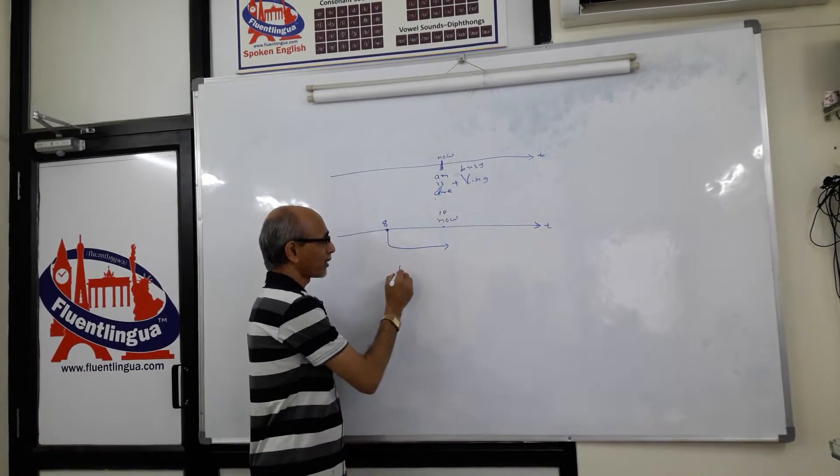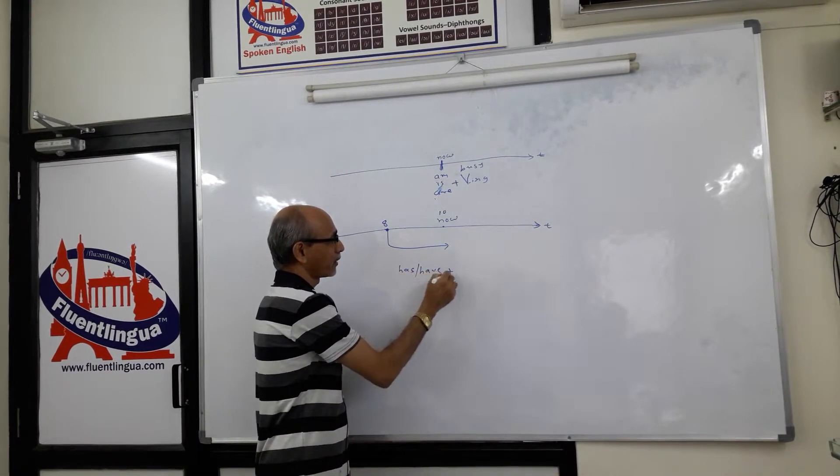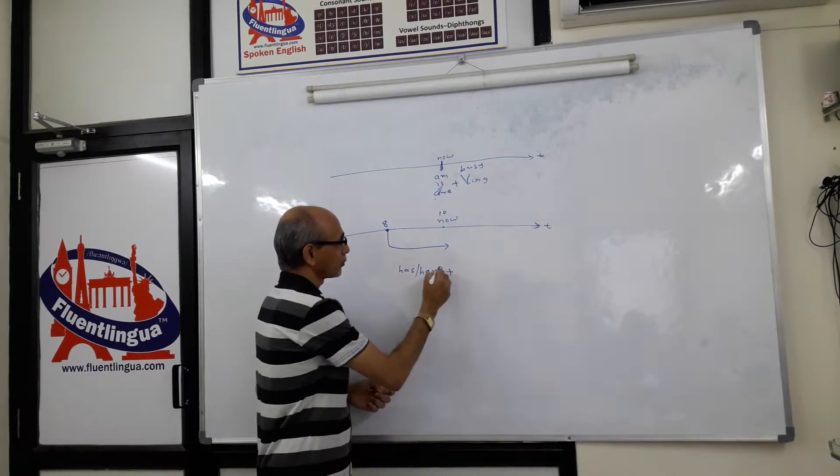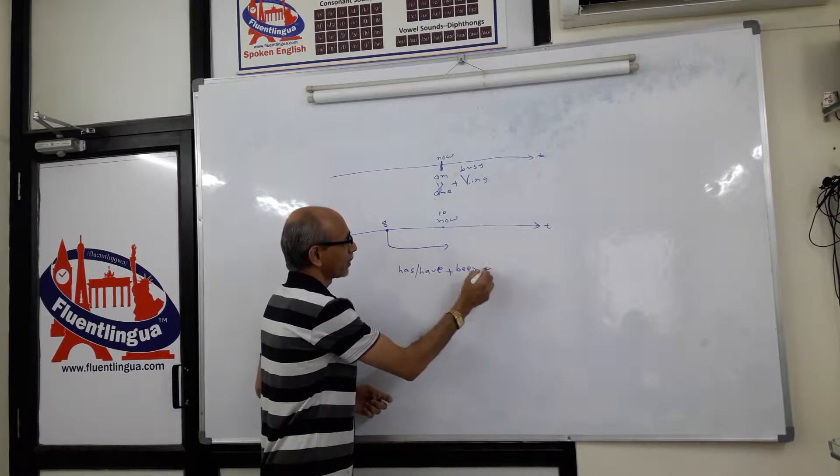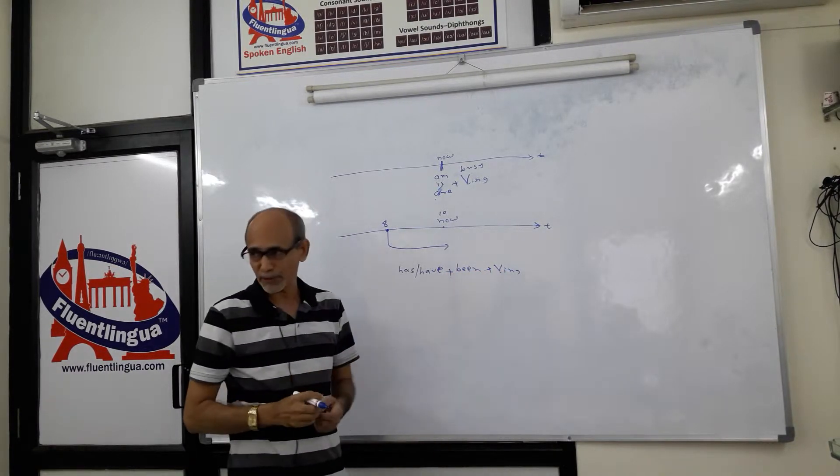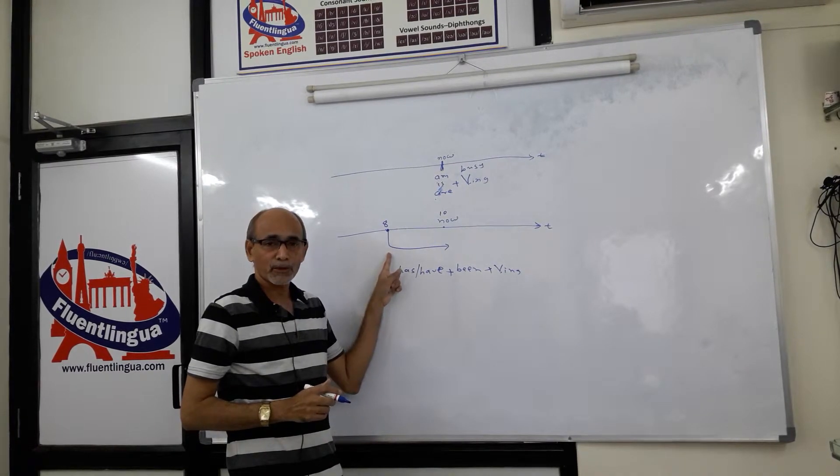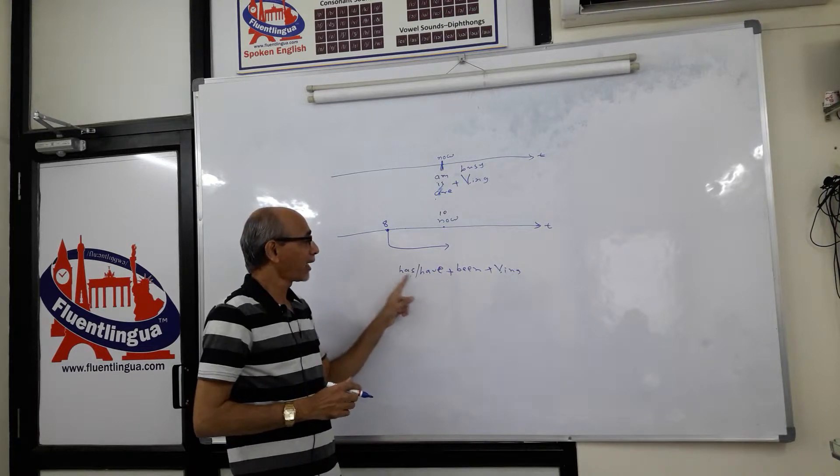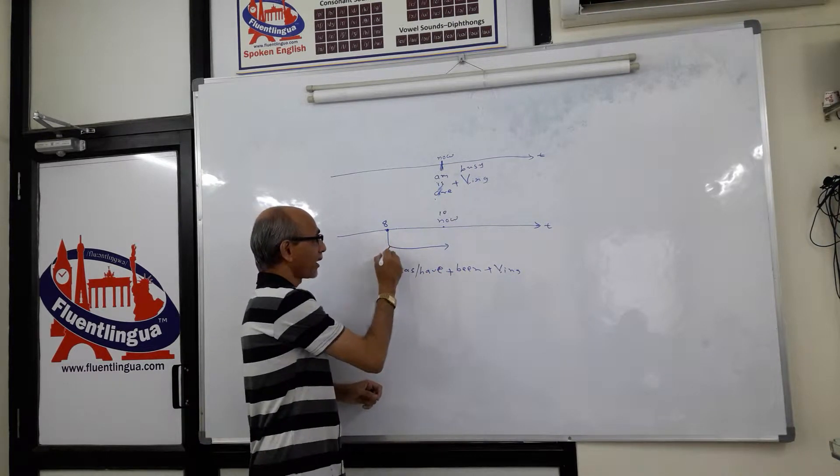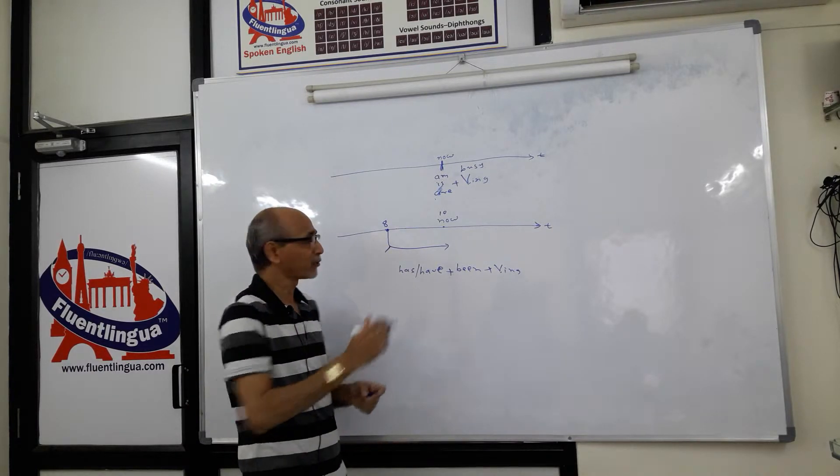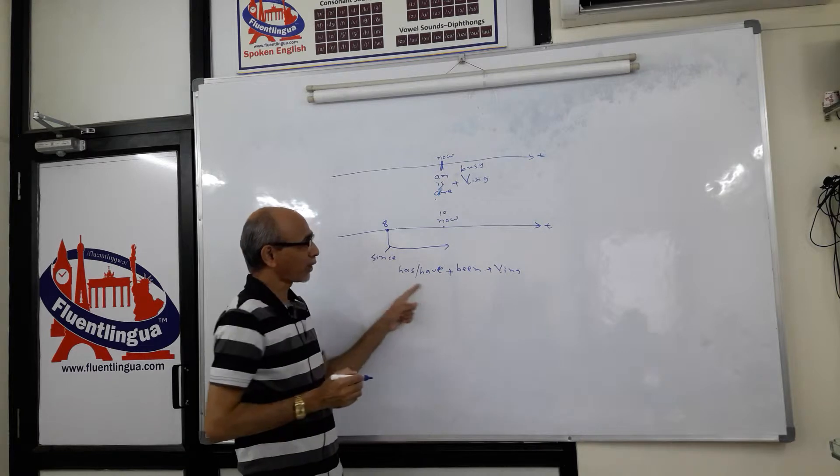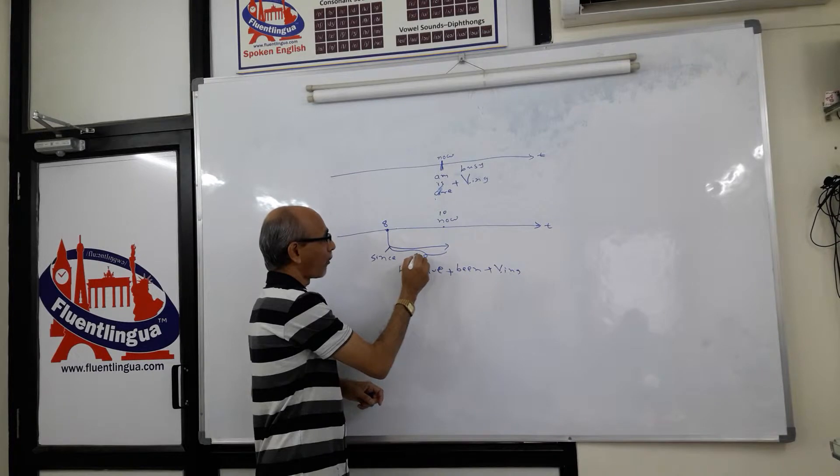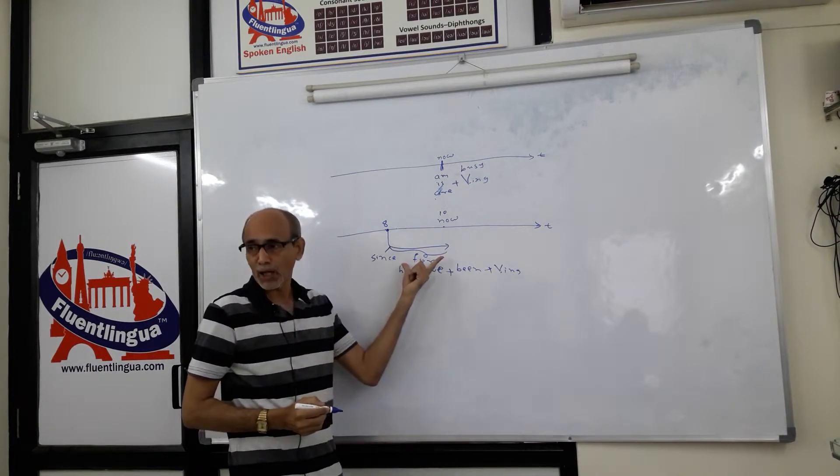So here I require has or have, and after that I require the past participle form, been, and then the -ing form of the verb if it is a continuous action. So I started teaching at 8 o'clock, and even right now at 10 o'clock I am teaching. What can I say? I have been teaching. And then I can give the time period in two ways. I can give the beginning point with since, like I have been teaching since 8 o'clock, or I can give the period of time using for. So I have been teaching for two hours. This is for a continuous action.